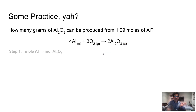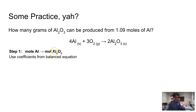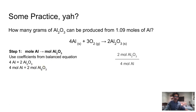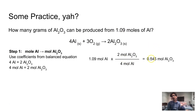Step one, I'm going to change those moles of aluminum to moles of aluminum oxide using the coefficients from the balanced equation. Aluminum and aluminum oxide: I can say 4 moles aluminum equals 2 moles of aluminum oxide. I'll set this up as a fraction with the new units — aluminum oxide — going up top, and the old units down below. I'll multiply 1.09 by this fraction, and that gives me an answer of 0.545 moles of aluminum oxide. I've changed my moles of aluminum to moles of aluminum oxide.